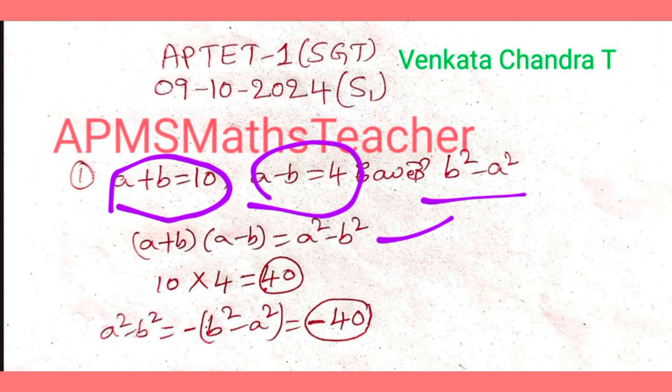First, A plus B into A minus B multiply, so 10 into 4 is 40. So we have the value A square minus B square equals 40. But we need B square minus A square, so we take the negative: B square minus A square equals minus 40.